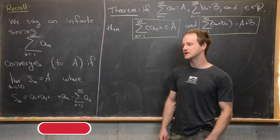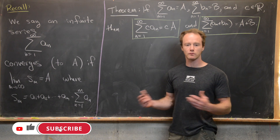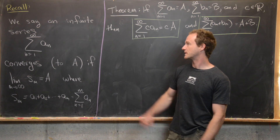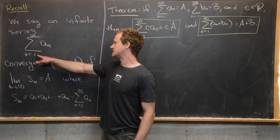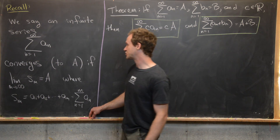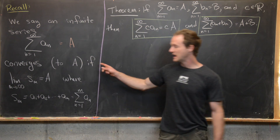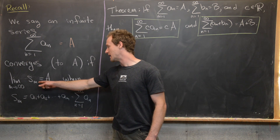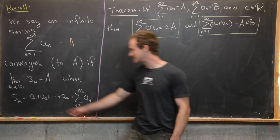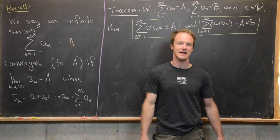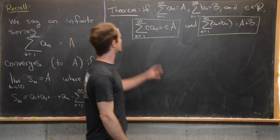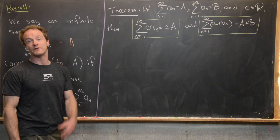Here we're going to start more deeply looking at infinite series, starting with a few pretty simple results that will help us build more important and famous results. Before we do that, I just want to recall something. We say that an infinite series, written as the sum n goes from one to infinity of a sub n, converges to a if the limit as m goes to infinity of s sub m equals a, where s sub m is the m-th partial sum: a1 plus a2 all the way up to a m, or written in summation notation as the sum as n goes from one to m of a sub n.